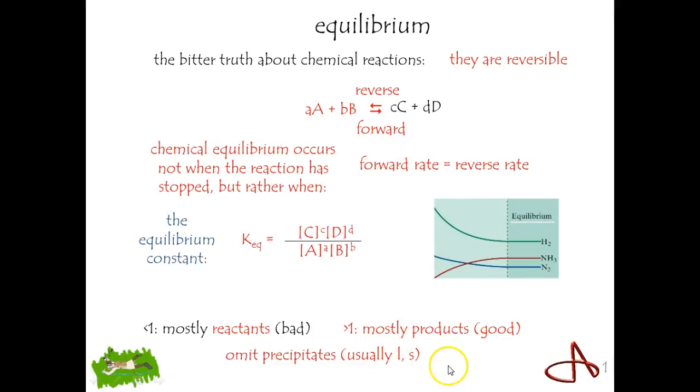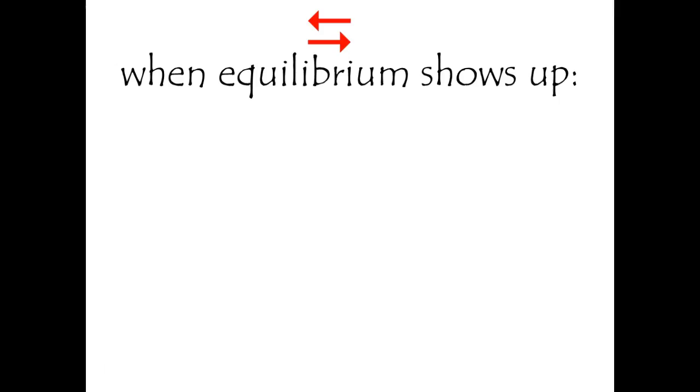for how to get a reaction to go to completion is simply remove the product as it's formed. So if you can get some of this stuff to kick out a solution, it'll then push the reaction forward and it'll keep going. That's a little bit about the bitter truth of chemical reactions. Let's continue a little bit.